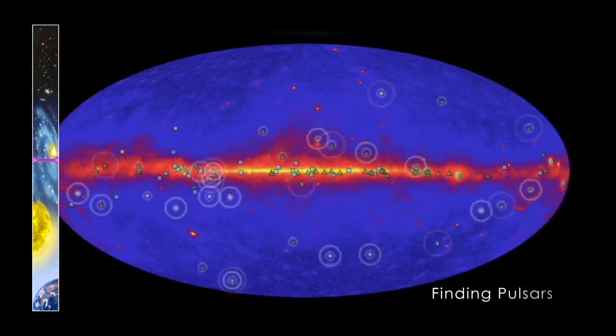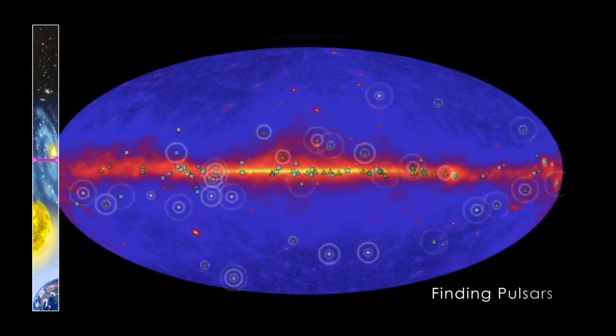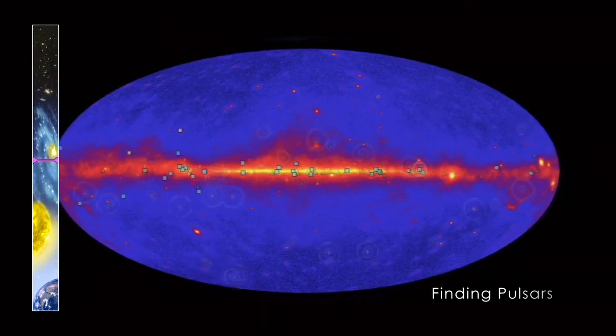In three years, Fermi has detected more than 100 gamma-ray pulsars, and about a third of gamma-ray pulsars were discovered by Fermi on the basis of their gamma-ray pulsations alone.